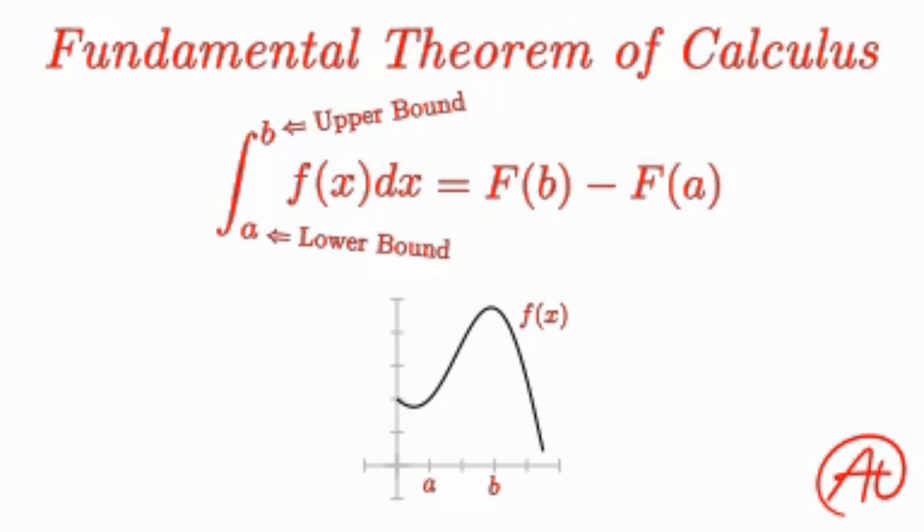These capital F's just represent the indefinite integral, or antiderivative, of the function f of x that's within the integral. So all you have to do is take the antiderivative of your function, plug in your upper bound b, and that will get this area here. Then you plug in your lower bound a to that same antiderivative to get this area here. Subtracting this area from the first area will leave you with the area that you wanted in the first place.